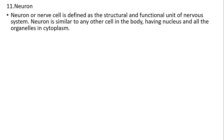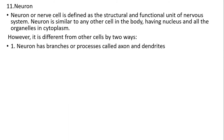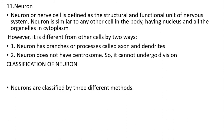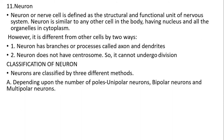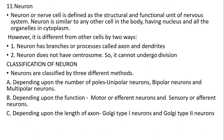Neuron: a neuron or nerve cell is defined as the structural and functional unit of the nervous system. It is similar to any other cell but has a large nucleus with organelles in the cytoplasm. It is different in other ways: a neuron has branches called axon and dendrites, and neurons do not have centrosomes so they cannot undergo division. Classification of neurons: by number of processes — unipolar, bipolar, and multipolar; by function — motor or efferent neurons and sensory or afferent neurons; by length — Golgi type 1 and Golgi type 2 neurons.